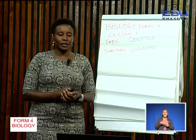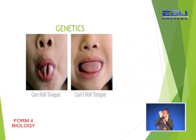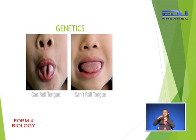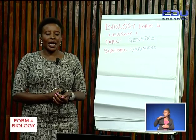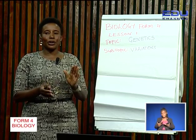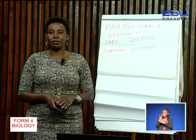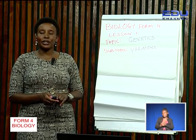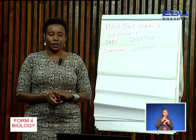There are two children shown — one is able to roll his tongue and the other is not. So you can either be a tongue roller or a non-tongue roller, but you cannot be in between the two. Hence, tongue rolling is a discontinuous variation.